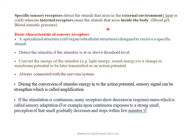Specific sensory receptors detect stimuli that arise in the external environment — these are external receptors, mainly found in our skin, detecting stimuli like heat or cold. There are also internal receptors within our body that detect stimuli arising inside, such as changes in blood pH or changes in blood osmotic pressure.